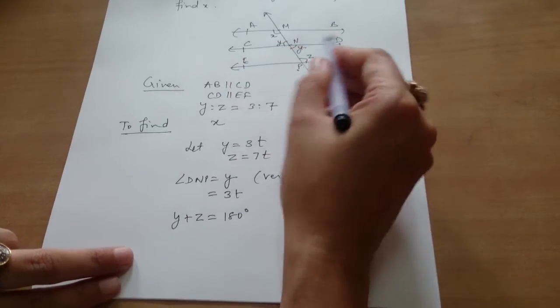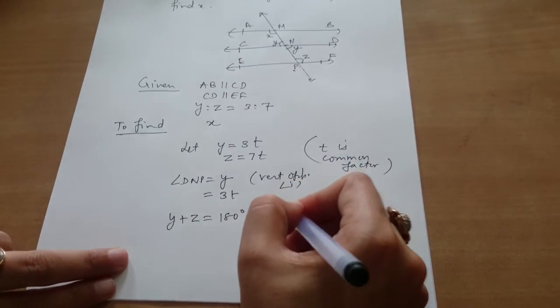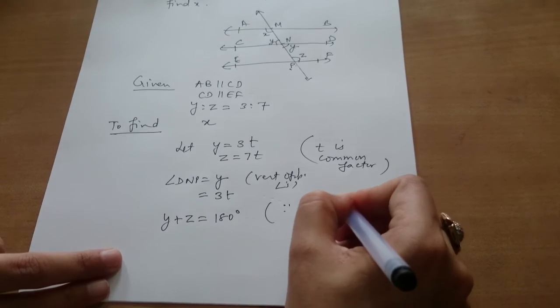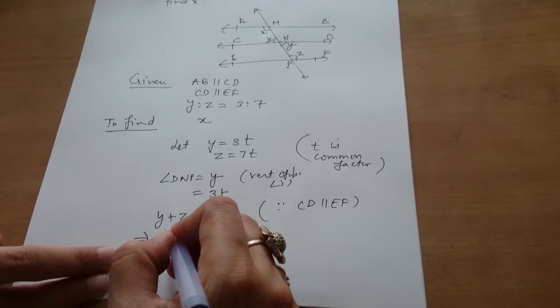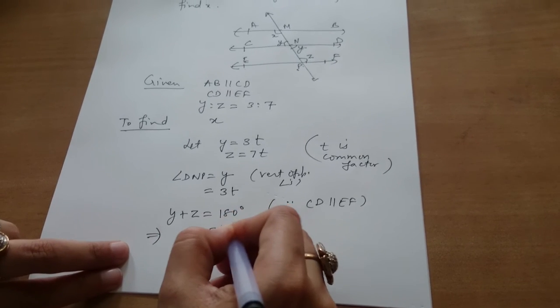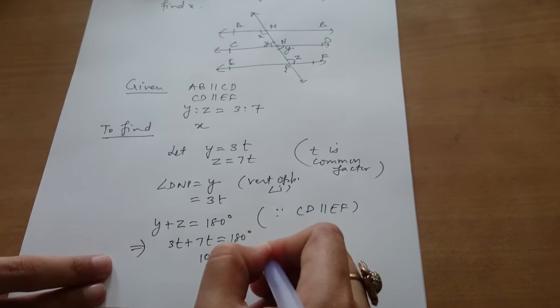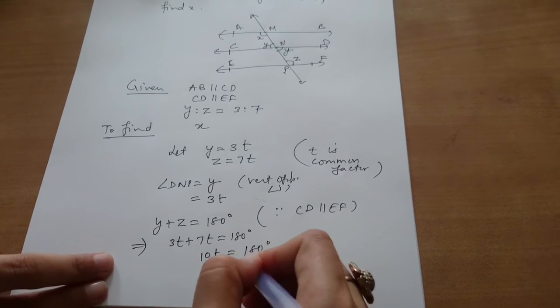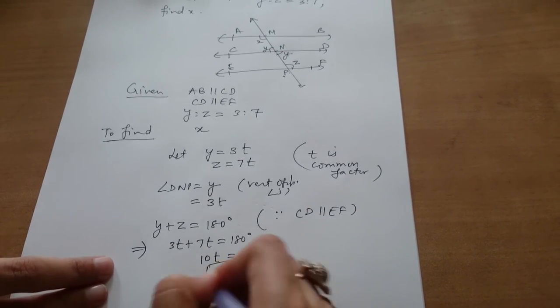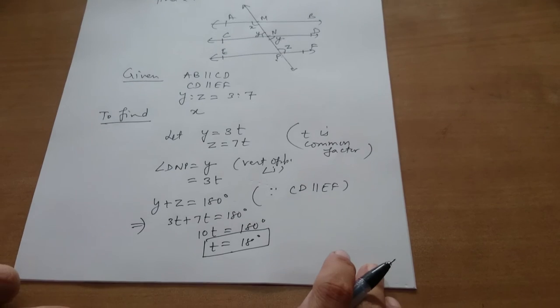Because CD is parallel to EF, this implies 3T plus 7T is equal to 180 degrees. 10T equals 180, so T equals 18 degrees.